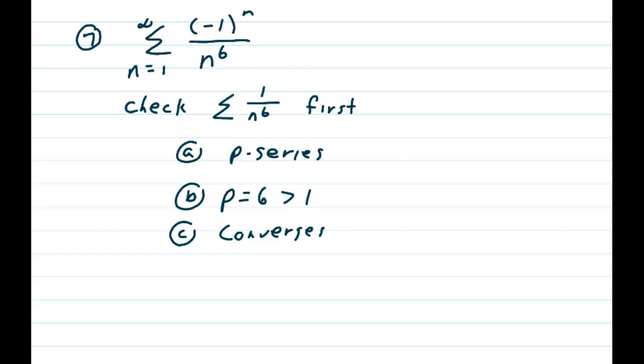Problem 7. Is the series summation n equals 1 to infinity of negative 1 to the nth over n to the 6th, absolutely convergent, conditionally convergent, or absolutely divergent?